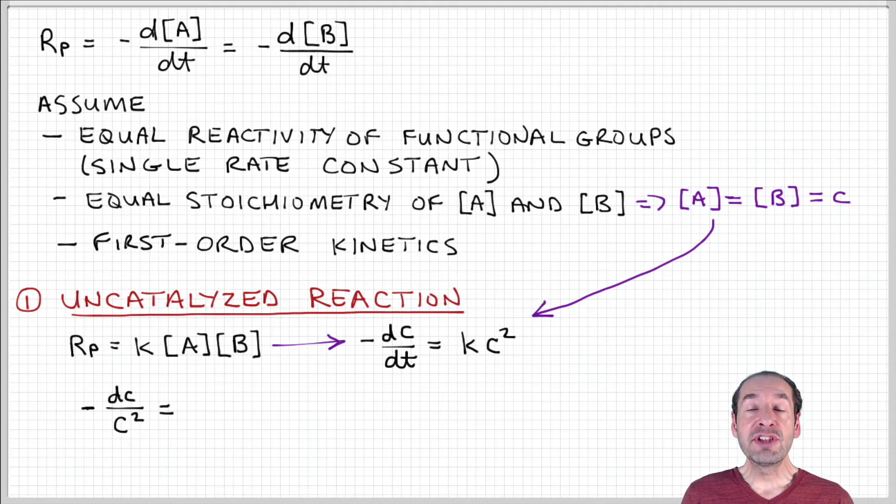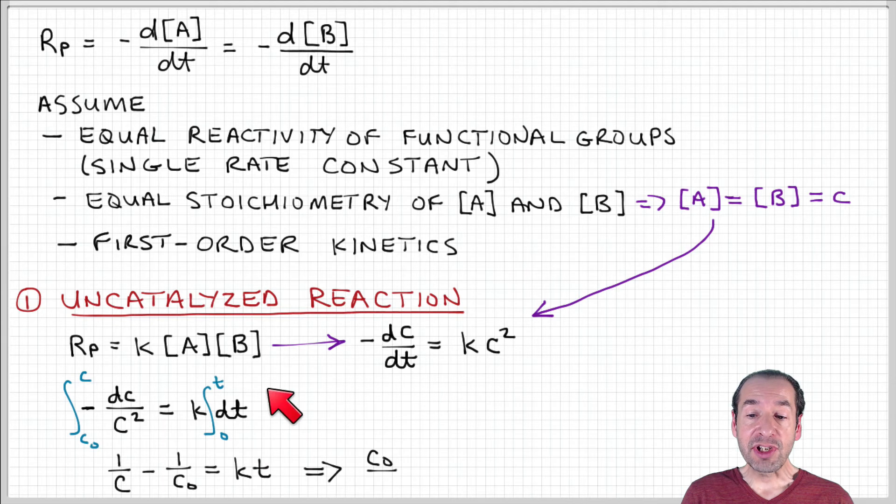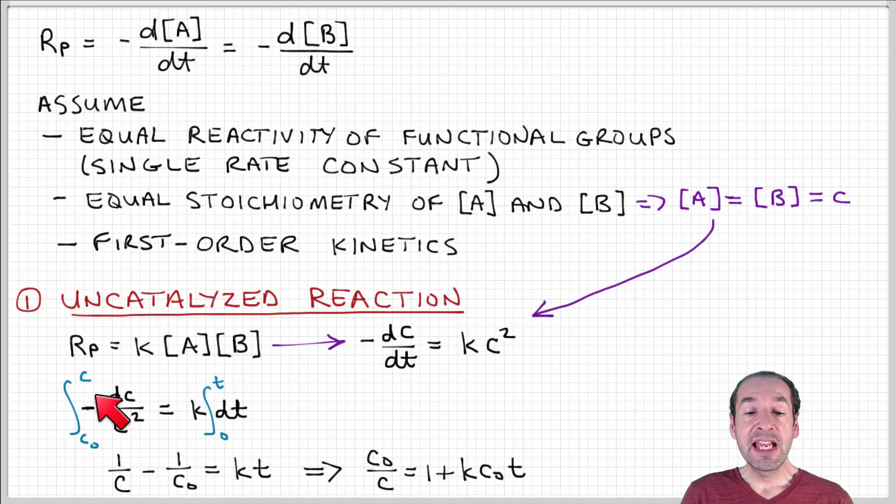This is a differential equation that I can solve by integration. I can get dC over C squared on the left-hand side and the other terms on the right-hand side. Integrating from the initial concentration to the concentration at some time T, I obtain 1 over C minus 1 over C naught equals KT.